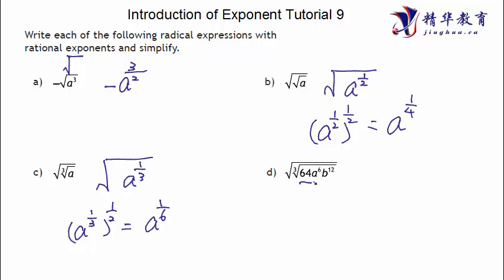We have 64, this is one term. A six, one term. B 12 is another term. We have three terms inside. And then the cube root is applying for each one of them. Let's convert it. 64, a six, and then B 12 is applied by 1 third, because this is cube root. Everything will be covered in a big square root.